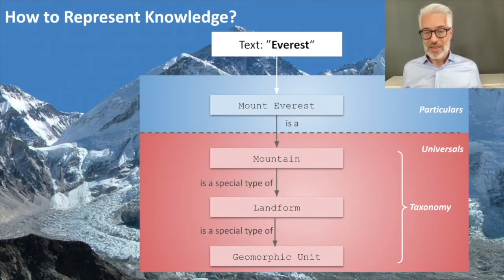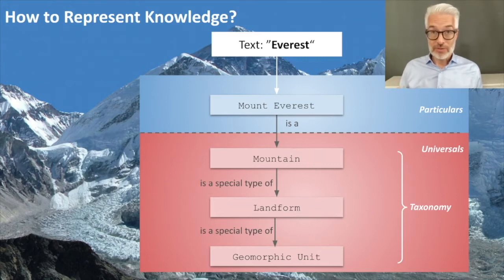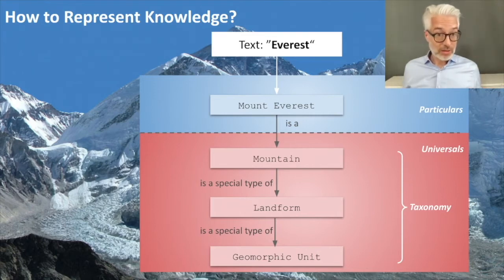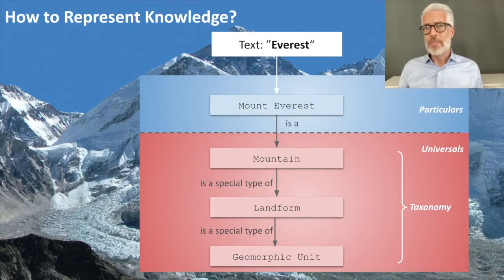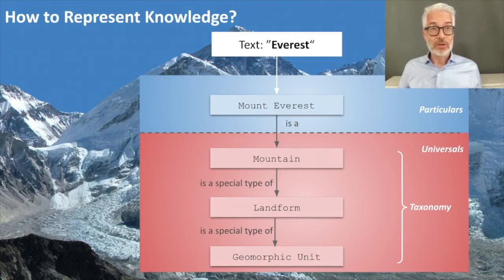How do we represent knowledge? We take 'everest' as text and map it to a unique concept: the concept of Mount Everest. But we have to distinguish these concepts. Mount Everest is a particular, specific mountain. Mountain, on the other hand, is a general concept — you think of anything that mountains have in common. So we distinguish particulars, which identify precisely one unique thing like Mount Everest, and universals, which are general concepts like mountain.